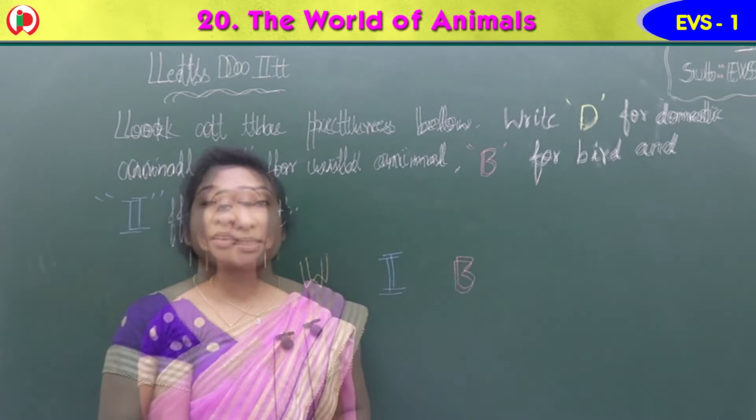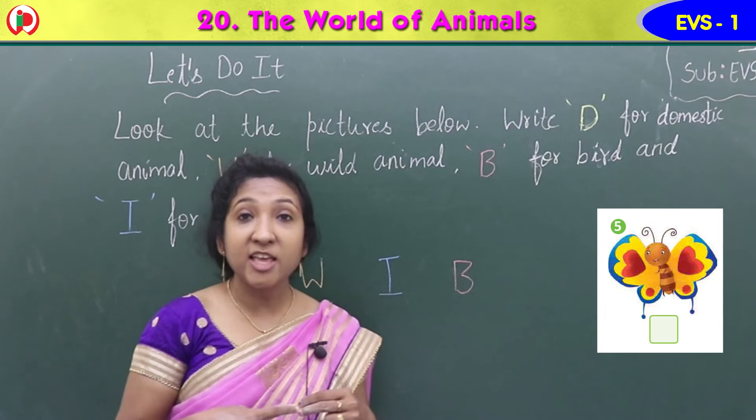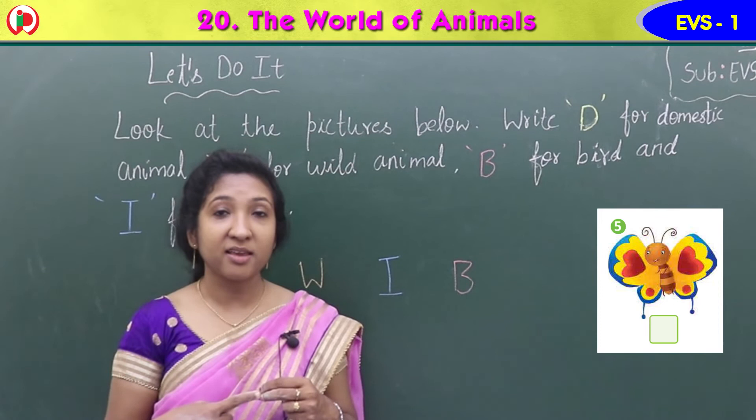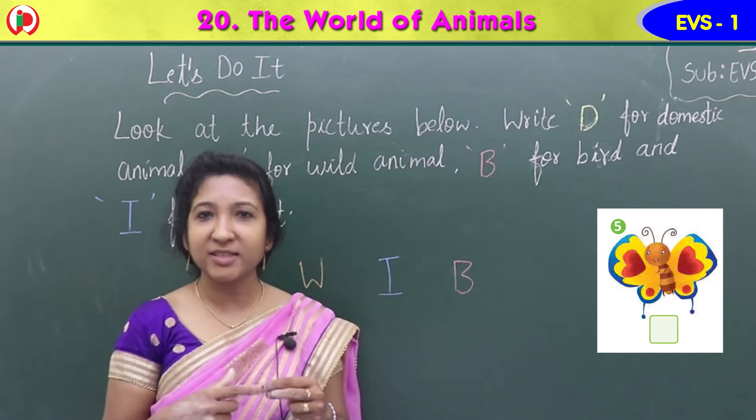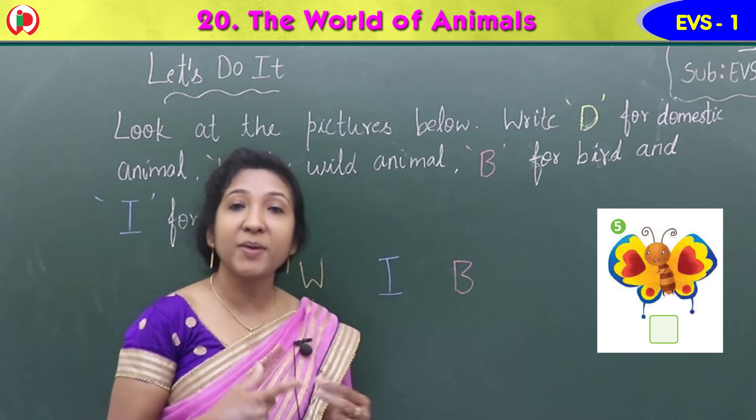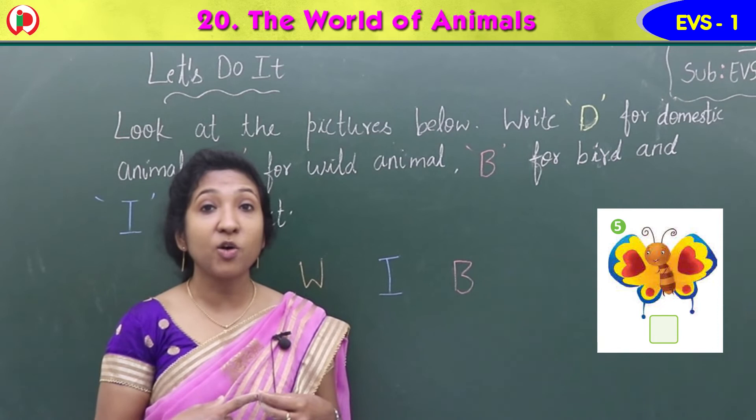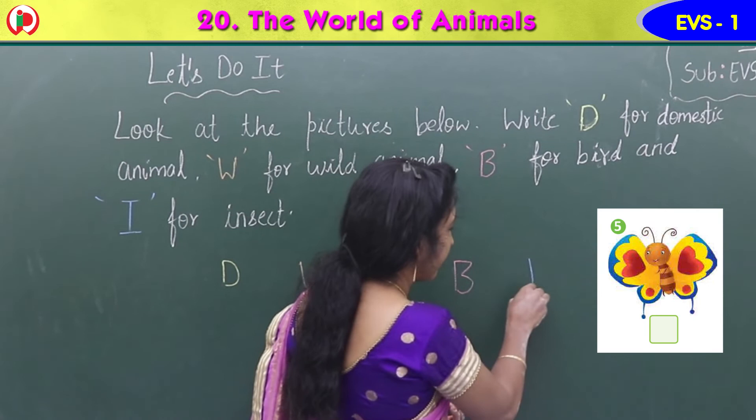Next image — which image can you see here? It is a butterfly. It is also a small insect; it comes under the group of insects, like housefly. So it is an insect and you can write I.